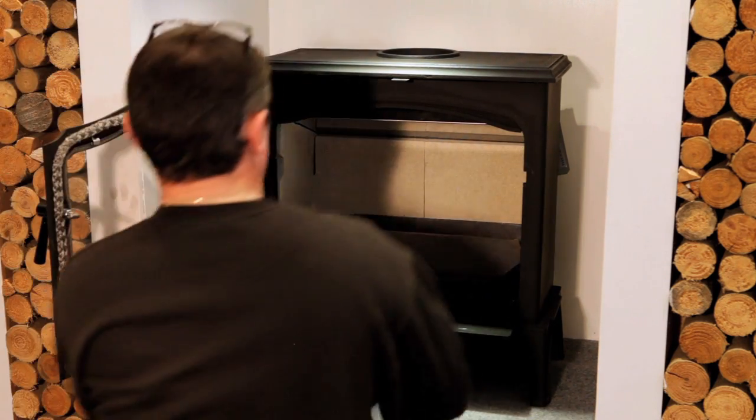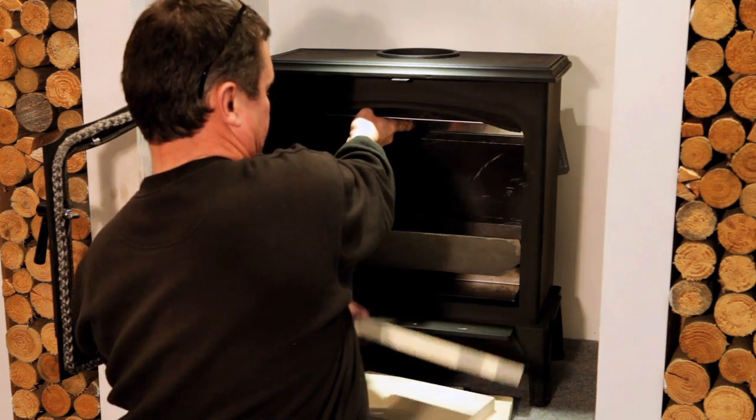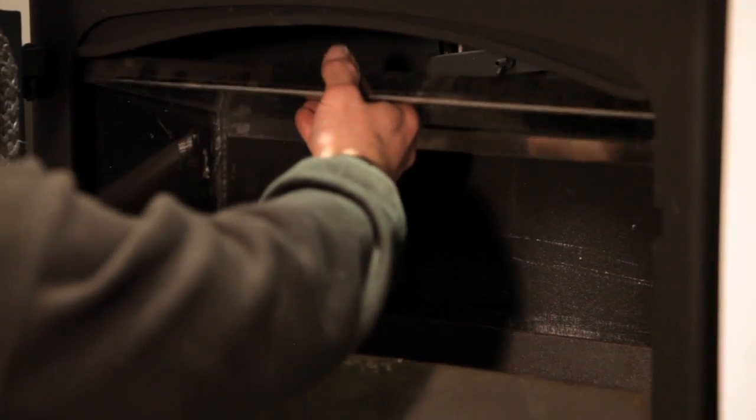First remove the vermiculite from the inside of the stove, starting with the left hand side. Let the baffle drop down onto the bottom of the stove.